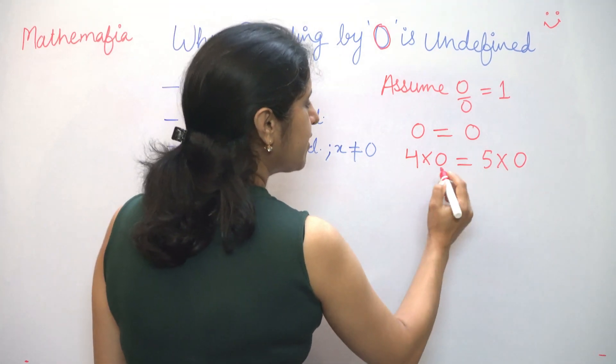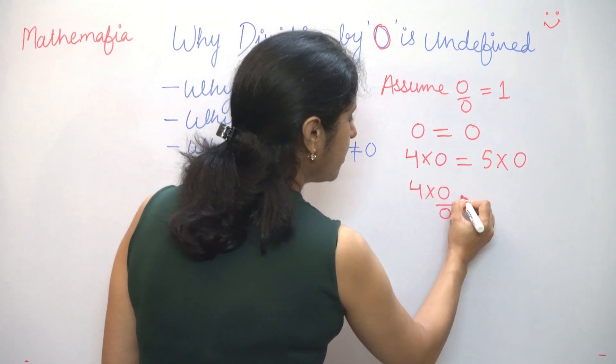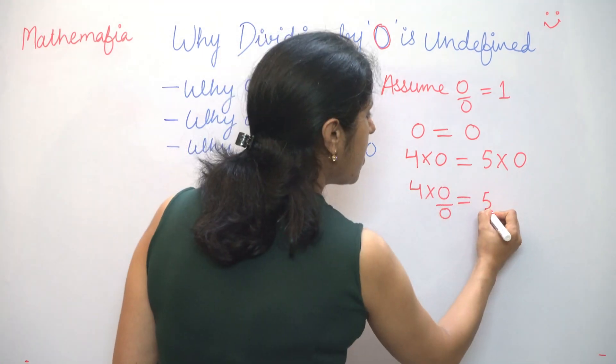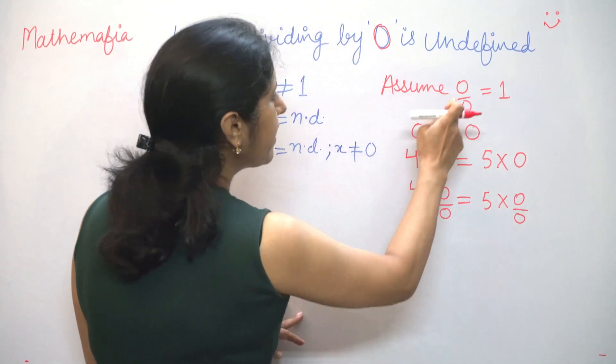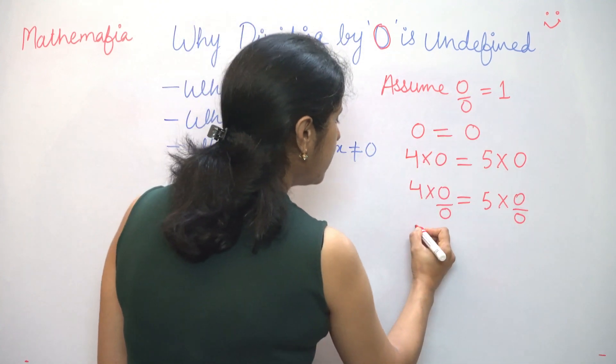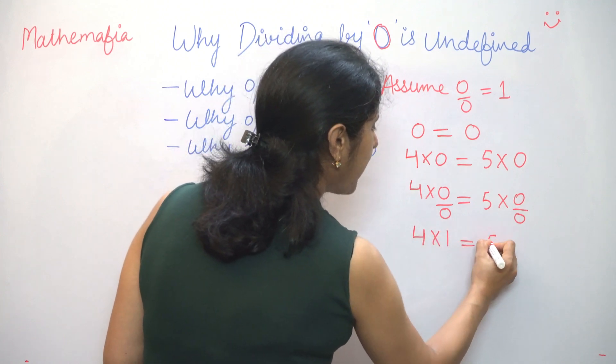Now, we will divide both sides by 0. This will give us 4 into 0 by 0 is equal to 5 into 0 by 0. Now, we had assumed that 0 by 0 is 1. So what does this give us? 4 into 1 is equal to 5 into 1.